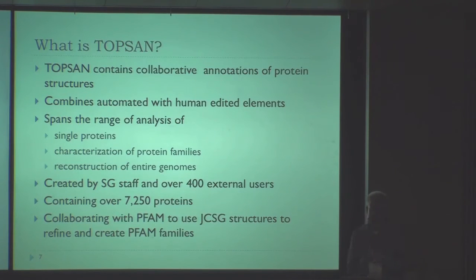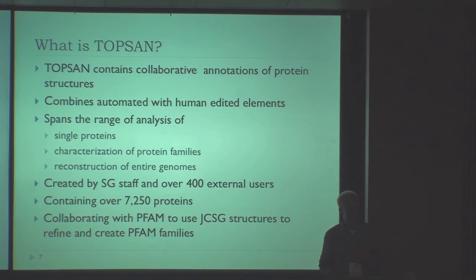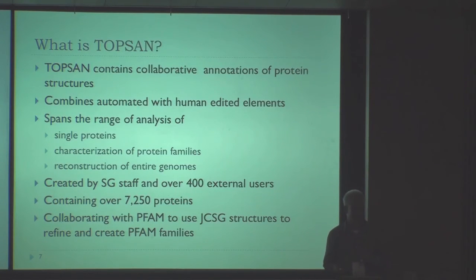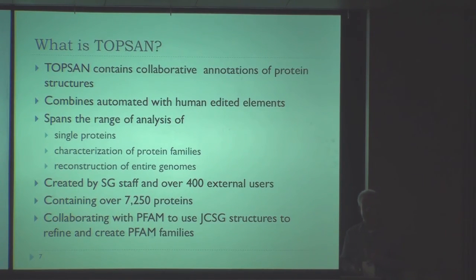Some of this data which is available via the semantic web has also been generated automatically. At this point, what is lacking is that we don't really have an ontology — that's still something we need to work on, and it's still in progress. But the hope is that eventually all those annotations, or at least part of them which can be encoded in some way, will be accessible for computational analysis using semantic web technology.